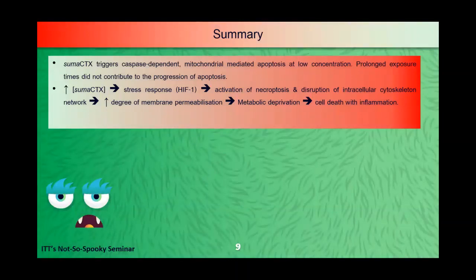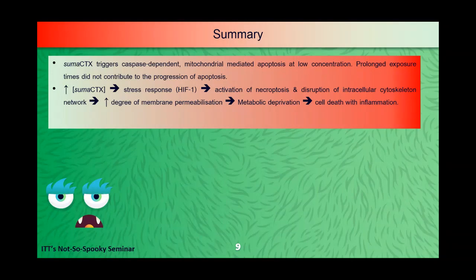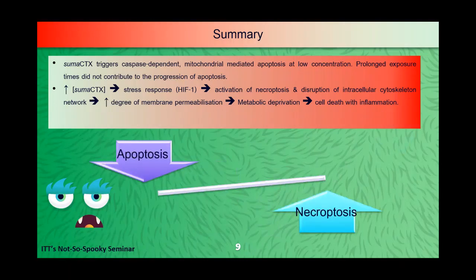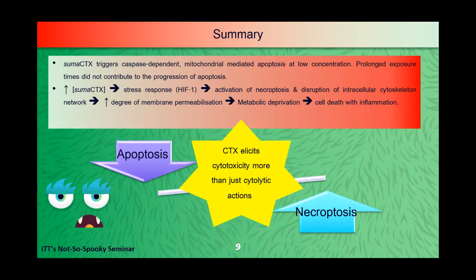So in summary, at low toxin concentration, the SUMA CTX actually triggers apoptosis, and cytotoxicity is a concentration-dependent but not time-dependent process. But when the toxin concentration increases, it actually triggers a stress response, activates necroptosis leading to membrane permeabilization and subsequently metabolic deprivation that causes cell death with inflammation. We conclude that SUMA CTX actually causes a transition of cell death from low concentrations to high concentration, in the form from apoptosis to necroptosis. So the CTX elicits cytotoxicity more than just cytolytic actions. Yeah, I will just stop here. Thanks.